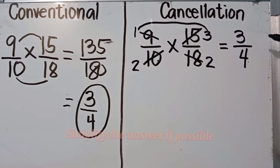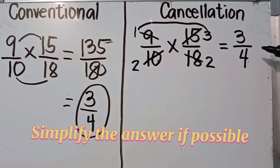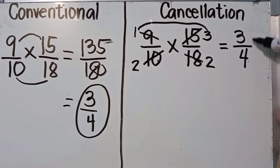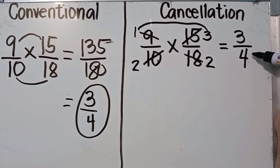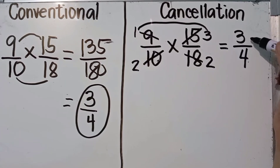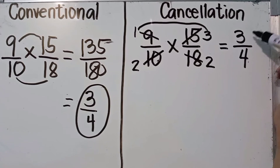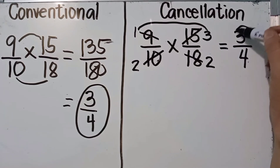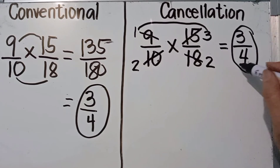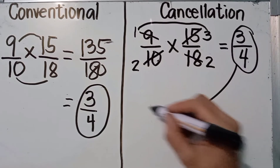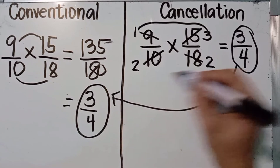Simplify the answer if possible. Three over four is already in lowest terms, so there is no need to convert. Our final answer is three fourths. Both methods give the same answer.